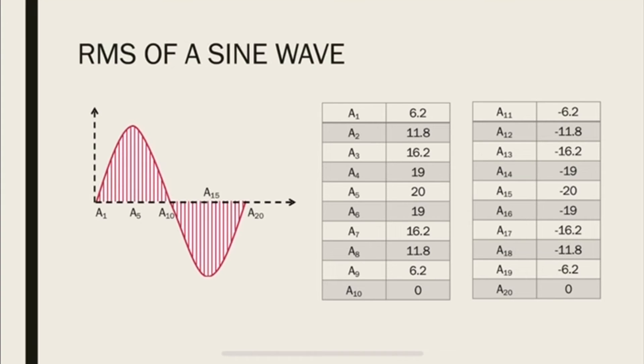So let's calculate the RMS of a sine wave. So I have here a sine wave and I've discretized into 20 points. So as you can see on the table, we have the amplitude from A1 to A20. Now, if we just look at the table and add all the values, you can see that there's an equivalent negative value for every positive value. So if you literally add them up, you will get zero, which is not true. It's not a good representation of the energy of the wave. So we take the RMS and find out the value.